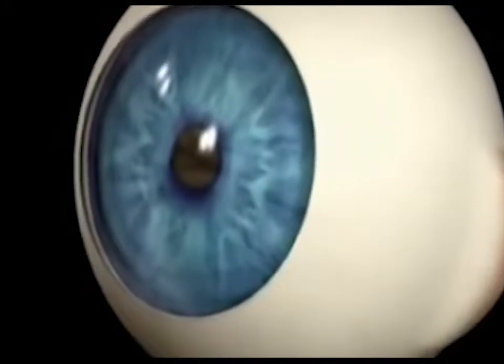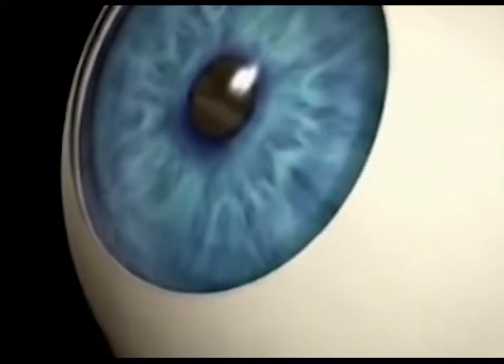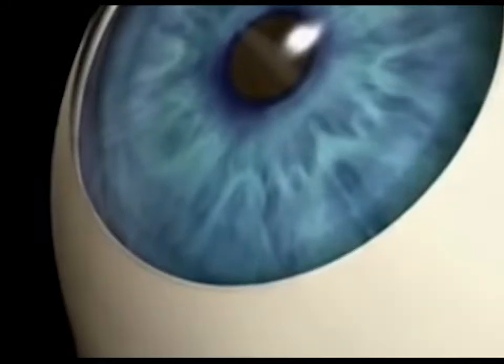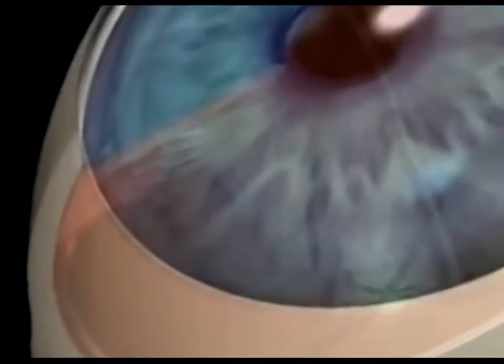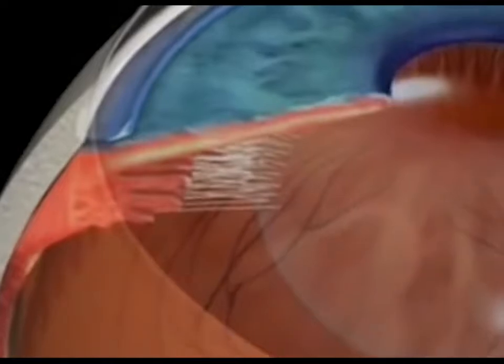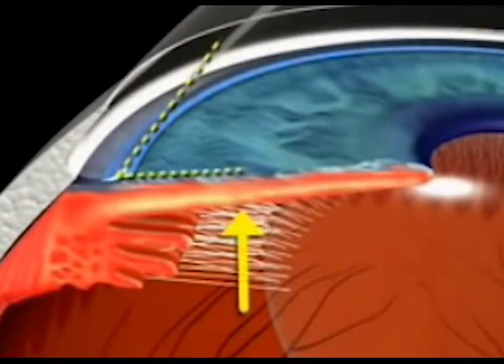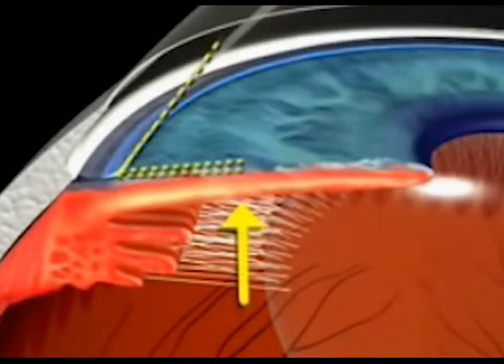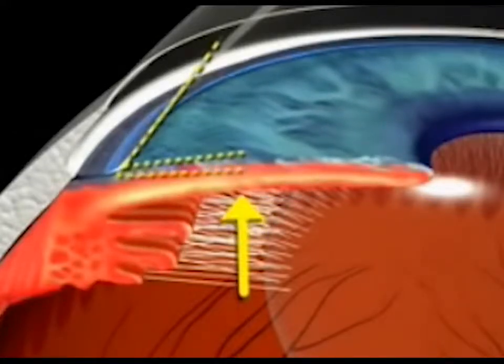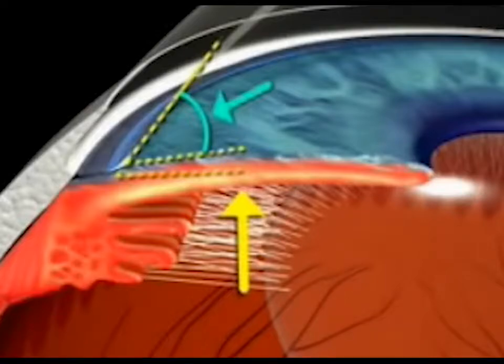Existen factores de riesgo llamados mayores y menores. Los factores de riesgo mayores son precisamente la presión intraocular, el espesor corneal —cuando hay una córnea fina existe un riesgo elevado de padecer glaucoma— y el aumento de la relación copa-papila, llamada excavación en la cabeza del nervio óptico. Estos son los factores que hoy en día se toman en cuenta para el diagnóstico o la sospecha de la enfermedad.